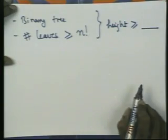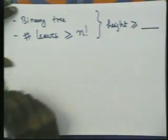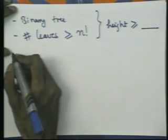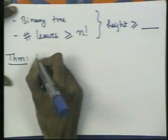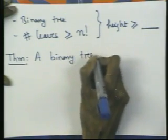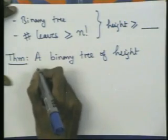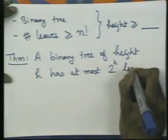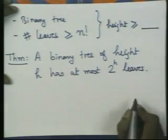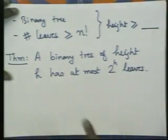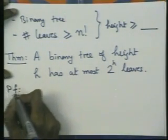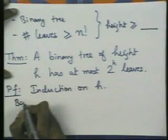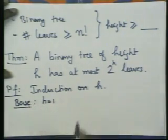Why can I say that the height is large? Well, suppose I have a binary tree of height h — the maximum number of leaves it can have is at most 2^h. This is something you have done in discrete structures. So: a binary tree of height h has at most 2^h leaves. The proof is by induction on h. The base case h = 1 is straightforward. For the inductive step, consider a binary tree T of height k+1. We assume the statement holds for all binary trees of height k or smaller.